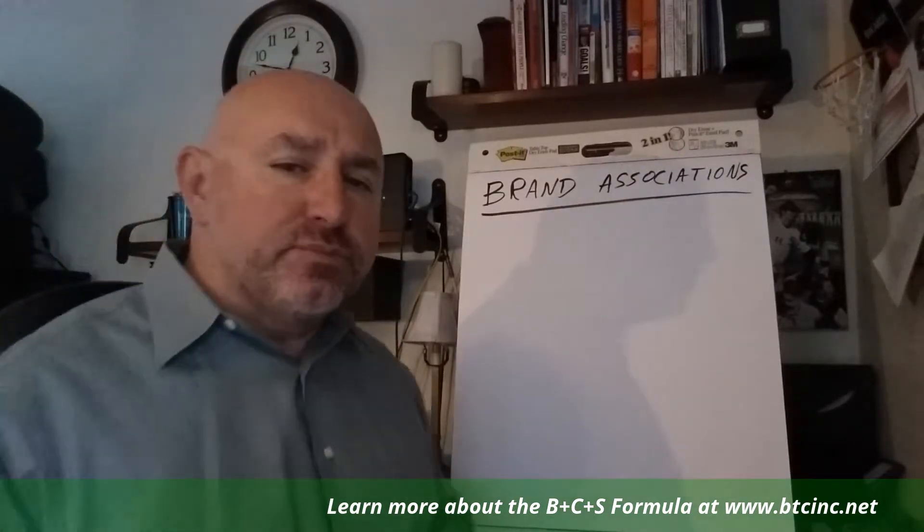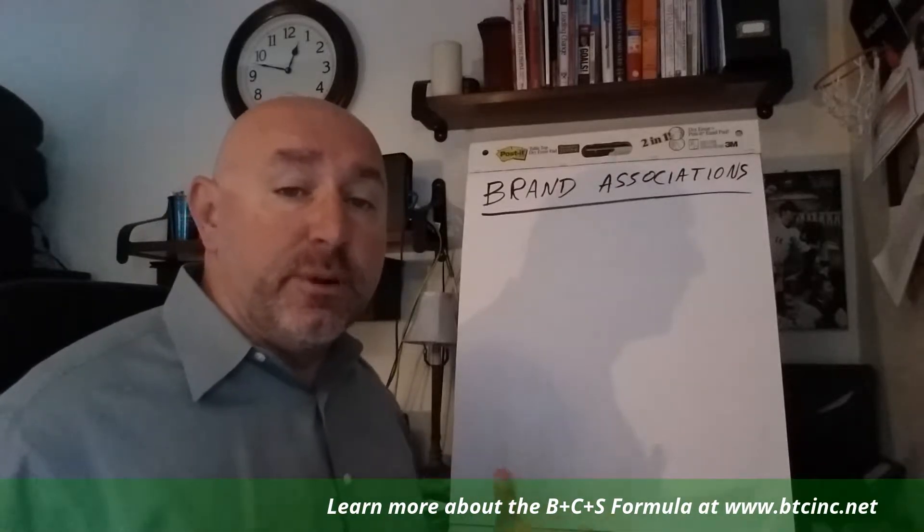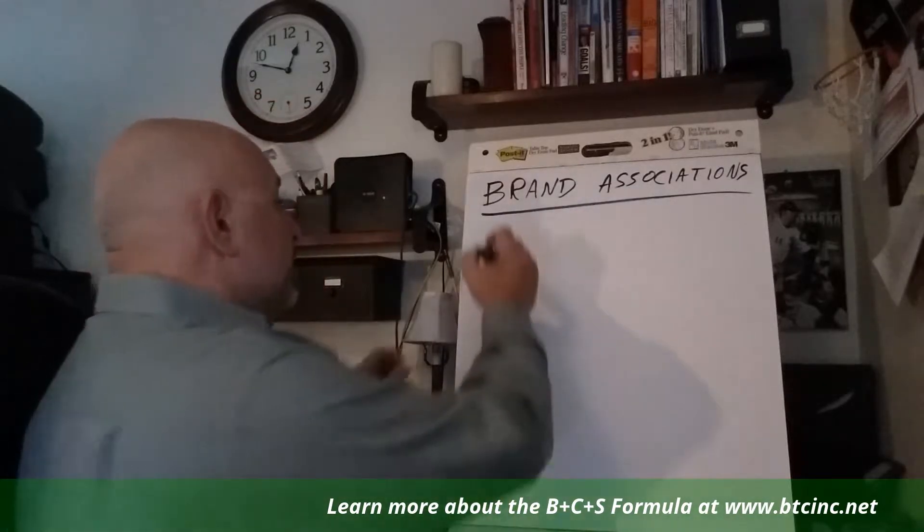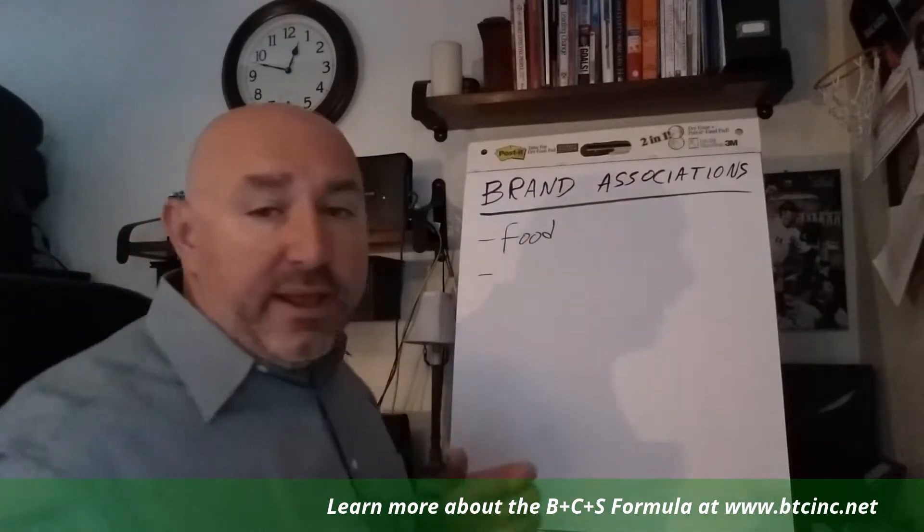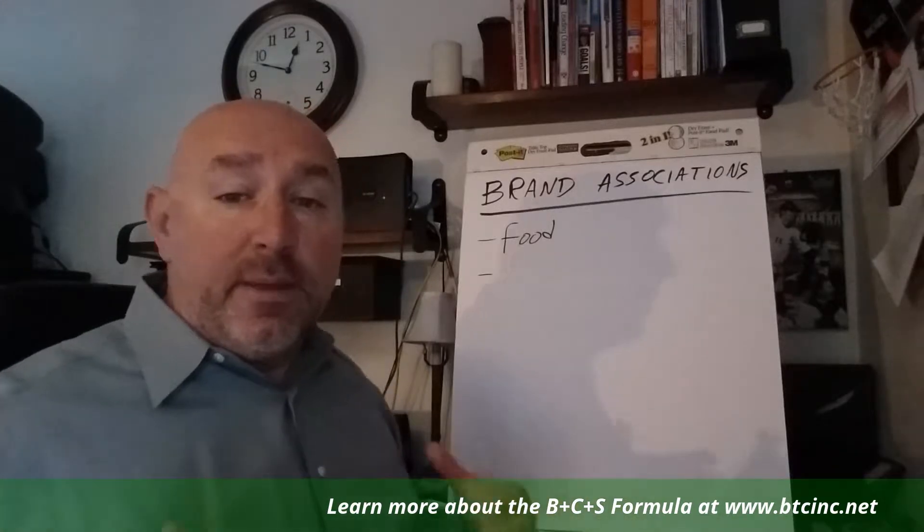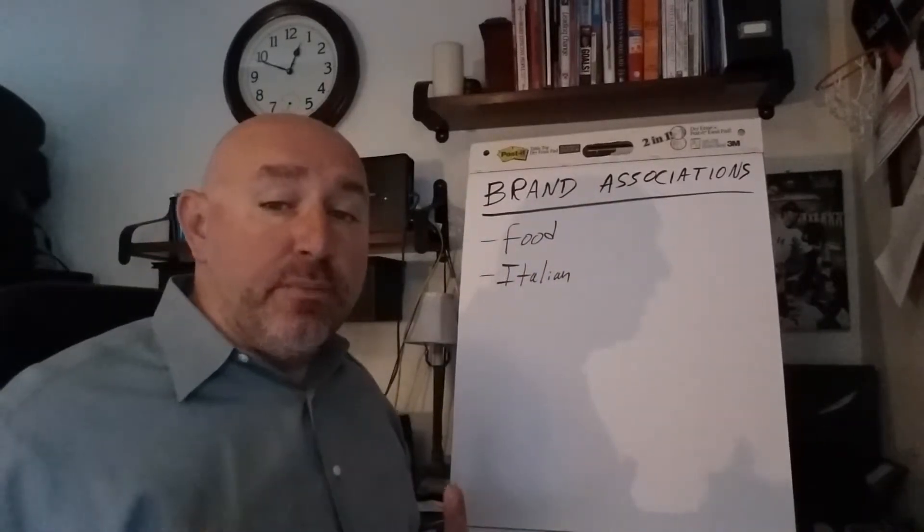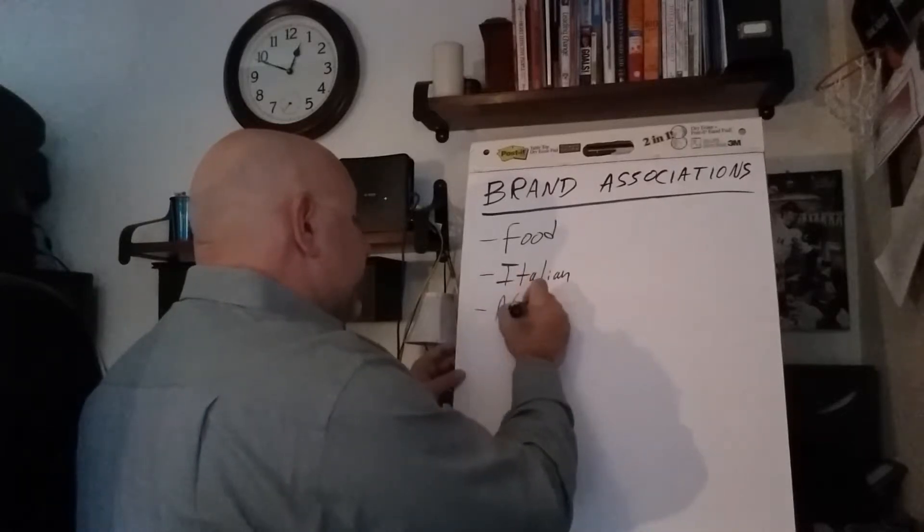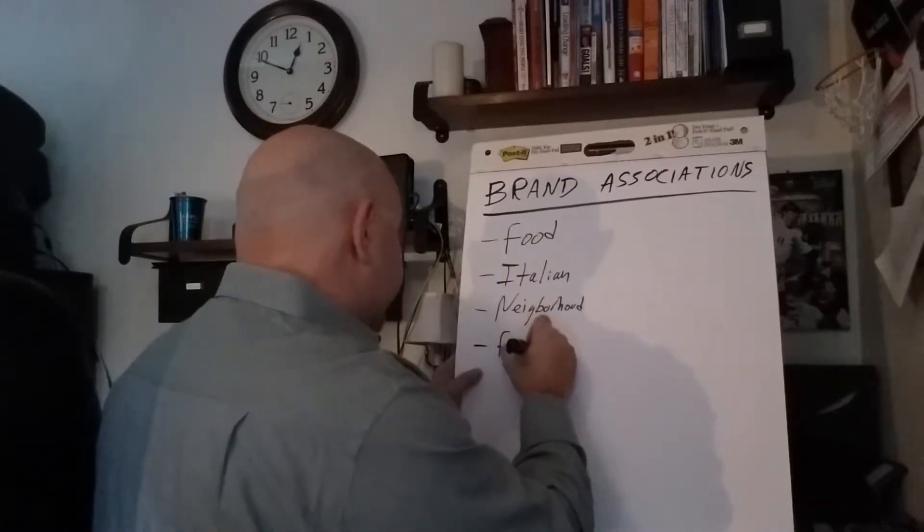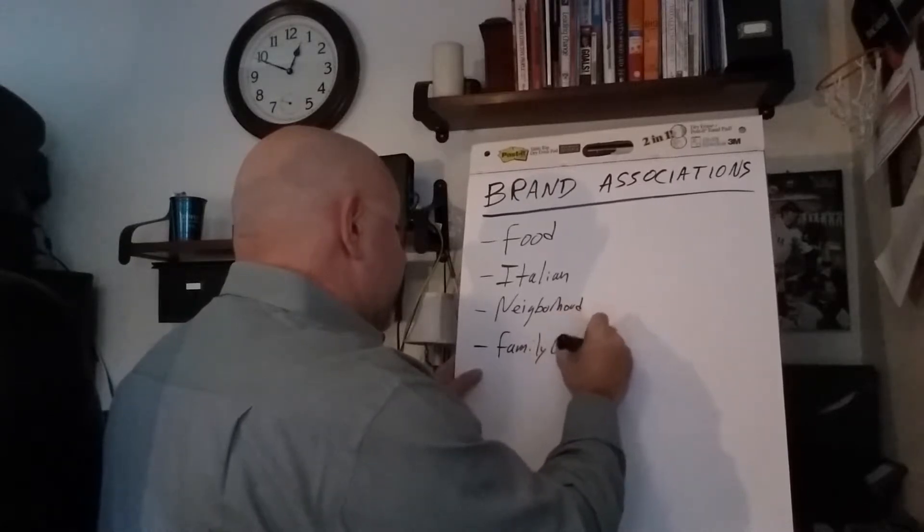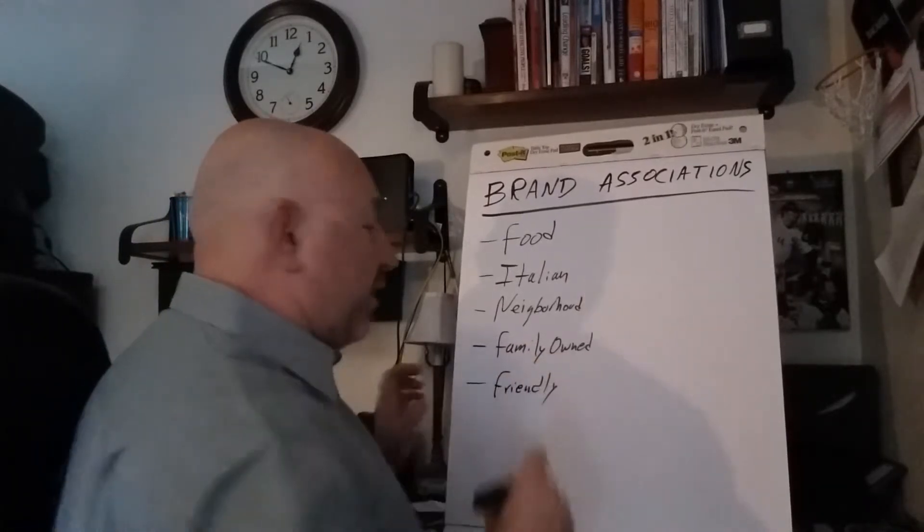So let's go over to the board real quick. So let's say we're starting a restaurant or we have a restaurant that we've had for a few years or a number of years. What are some of the brand associations with that? Well, one is obviously food, right? And then another may be the type of restaurant we are. Maybe we're an Italian restaurant. Another association may be neighborhood. Maybe you're in a particular neighborhood. Maybe another is family owned. Maybe yet another is friendly. Everybody greets you, you get a great experience and so forth.